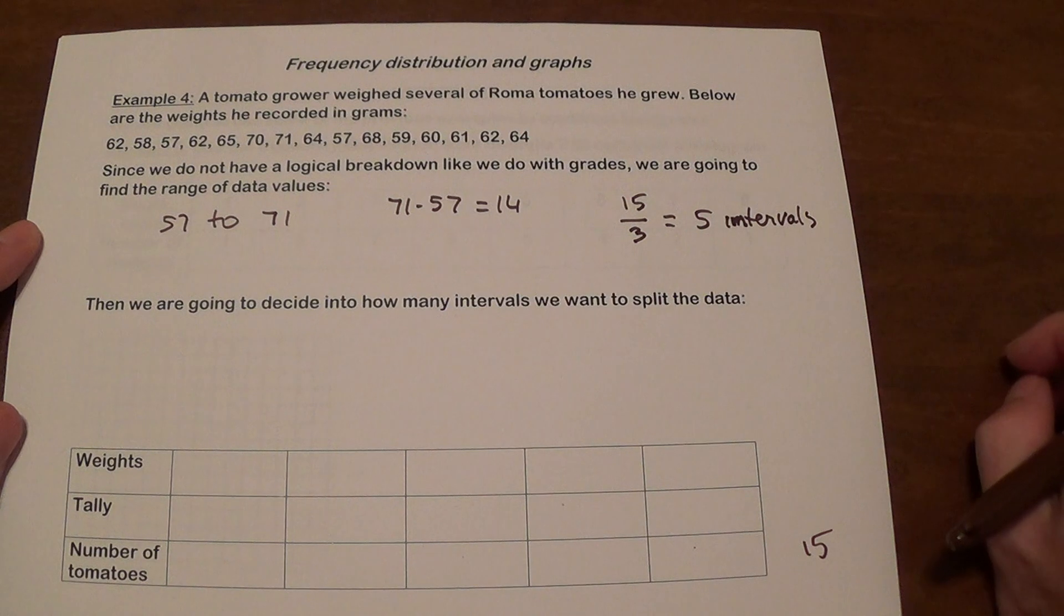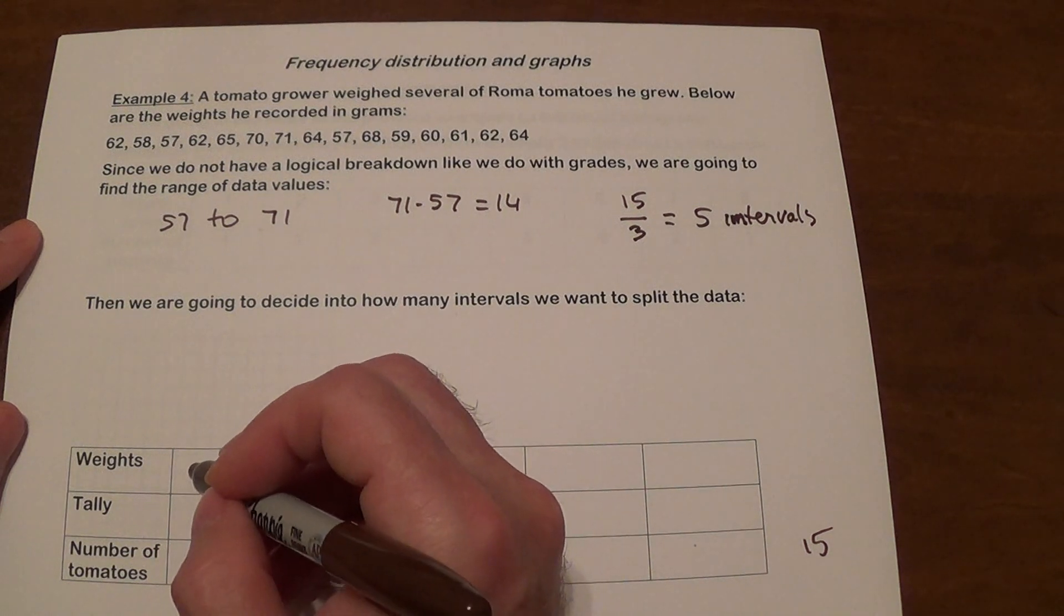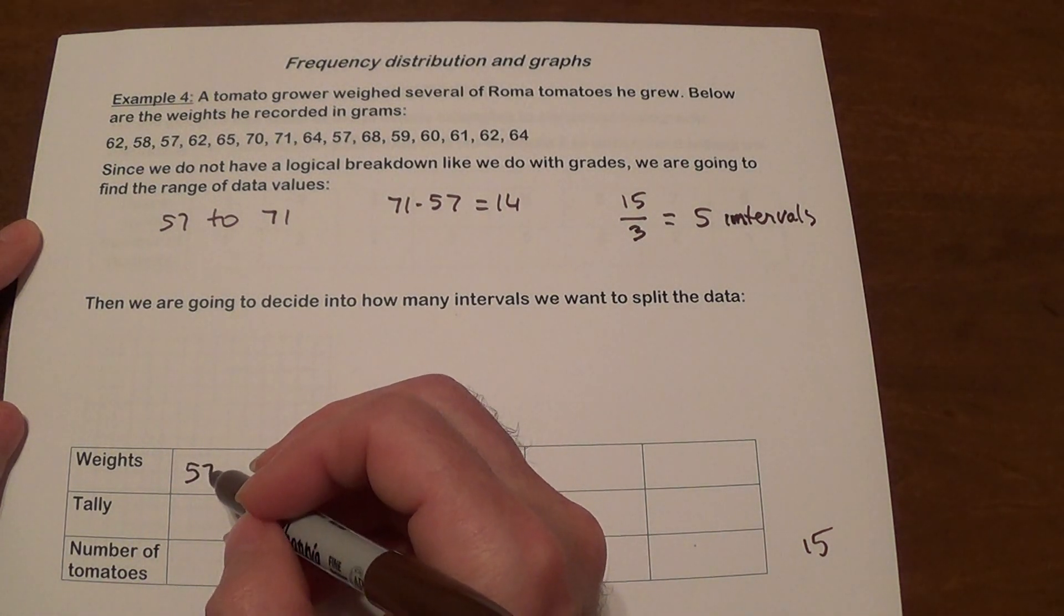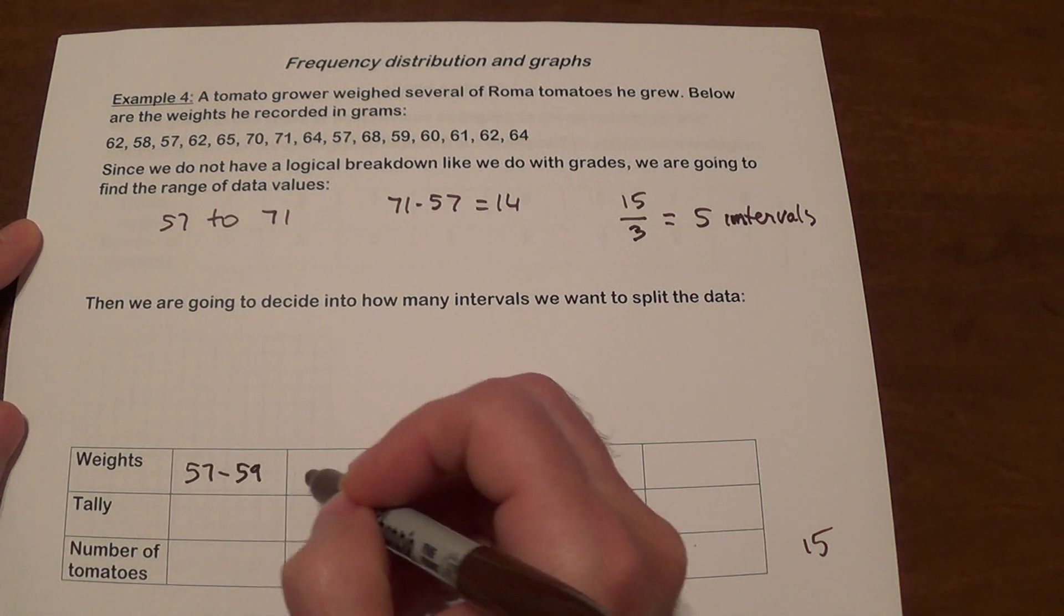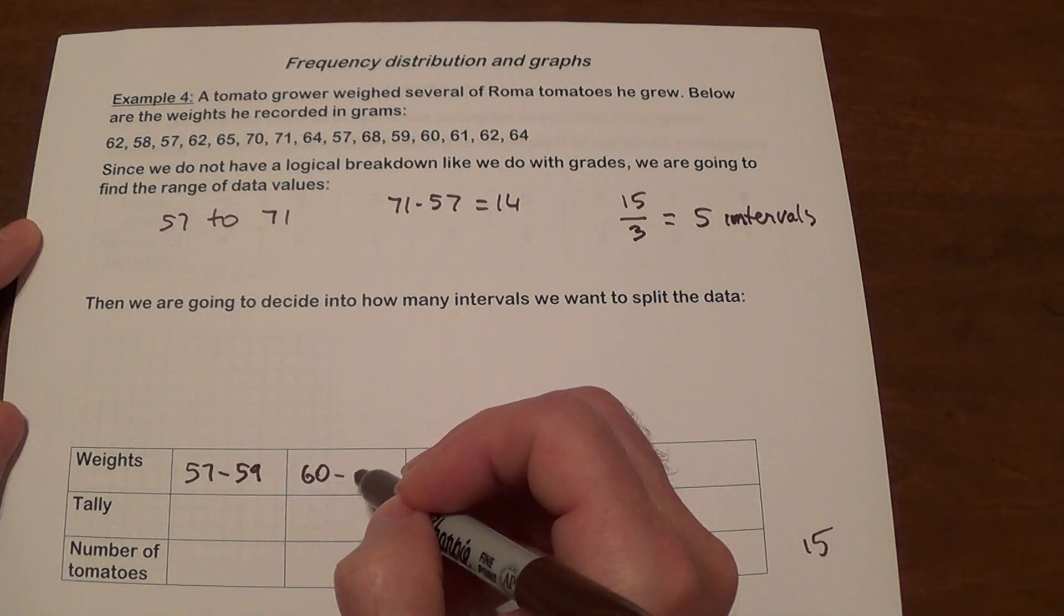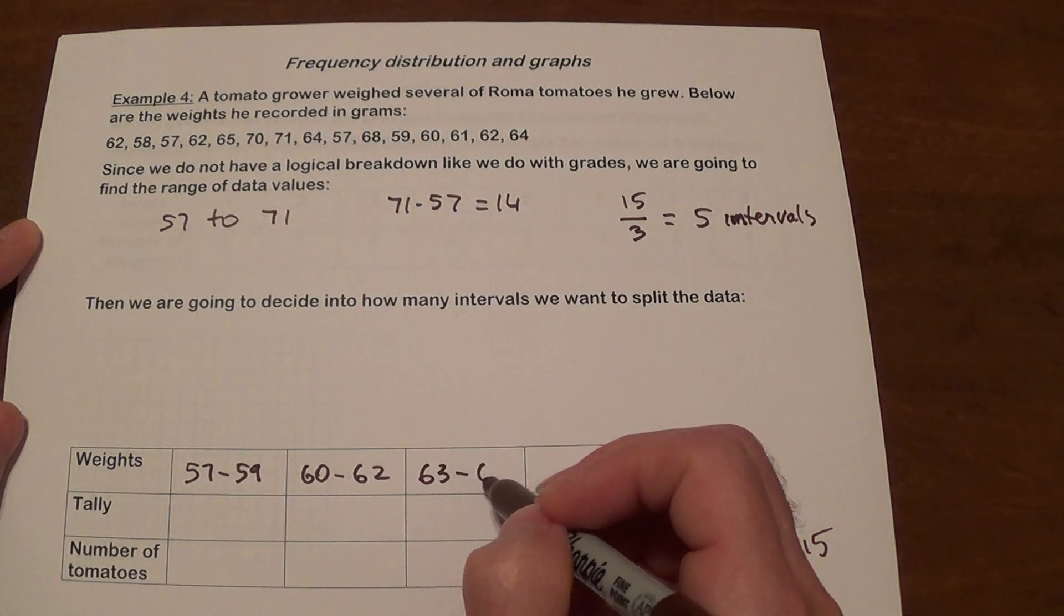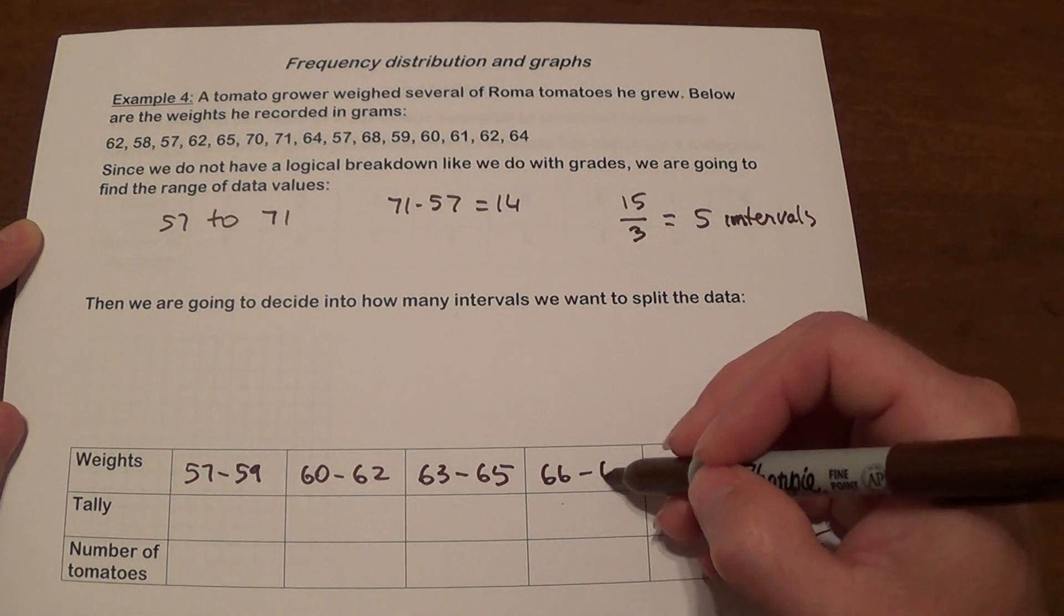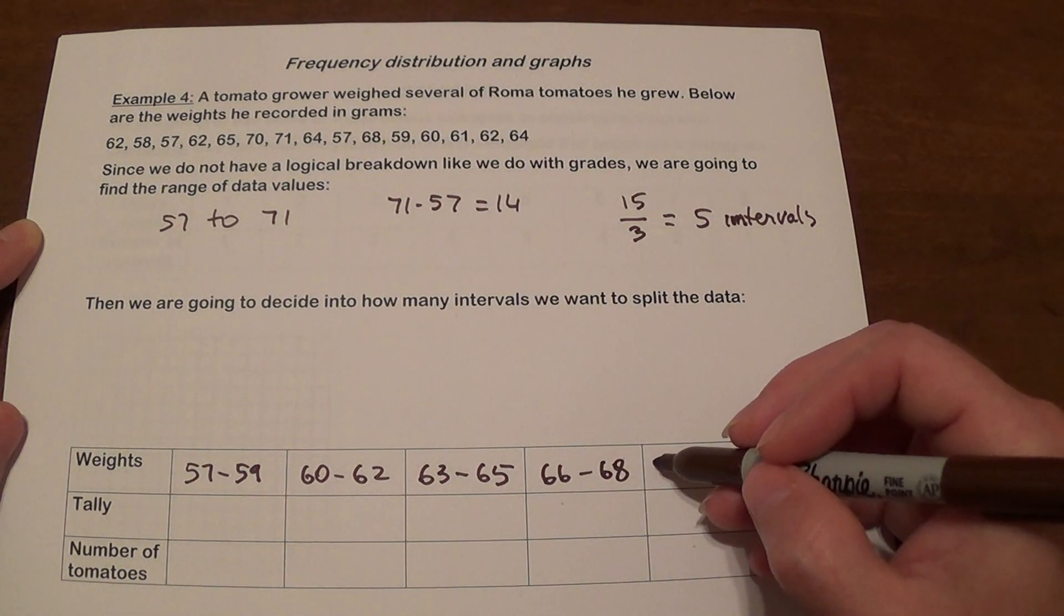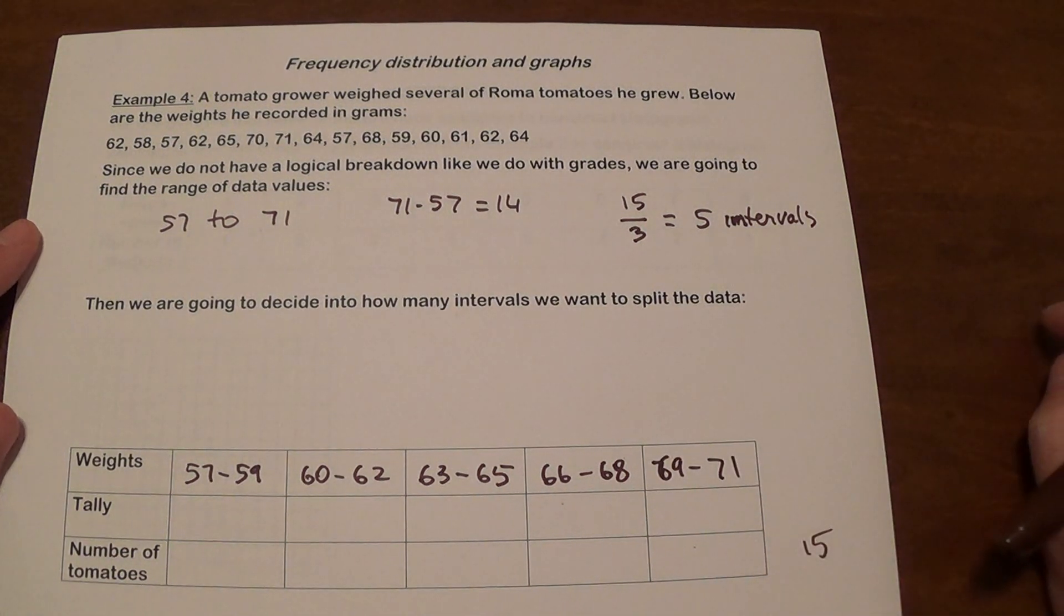And that's what we're going to go by. So how are we going to organize our intervals? We're going to go from 57, 58, 59 and we're going to go from 60, 61, 62, 63, 64, 65, 66, 67, 68, 69, 70, 71. Look, it worked out perfect.